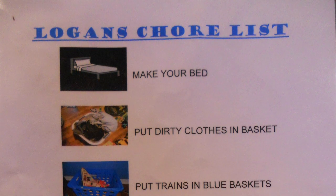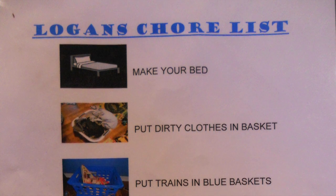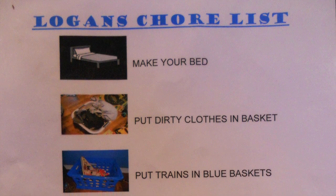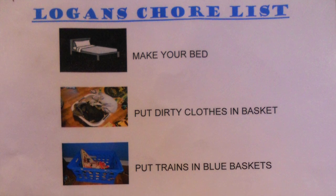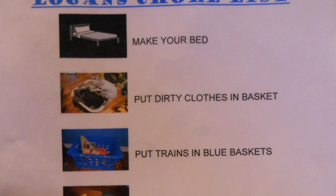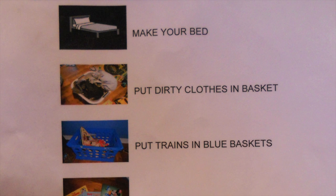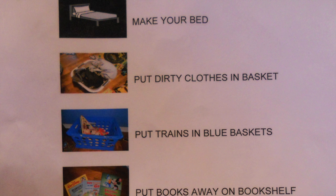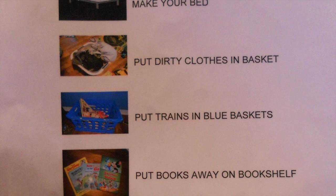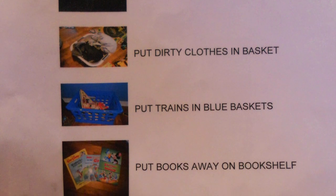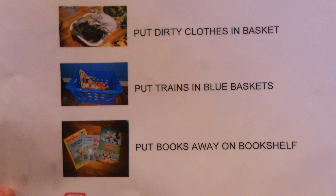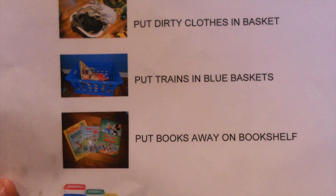The last picture schedule is Logan's chore chart that we use on the weekend. His first task is to make his bed. If he has soiled the sheets, we put them in the dirty clothes hamper — that's the second task — along with any dirty clothes. He has a white basket in his room but we've taken it out when he's in there because he will throw dirty clothes everywhere, so we keep it in our bedroom until the weekend. The next task is he puts his trains in the blue baskets — he has two blue baskets that he got for Christmas from grandma, and they are used specifically for his trains only.